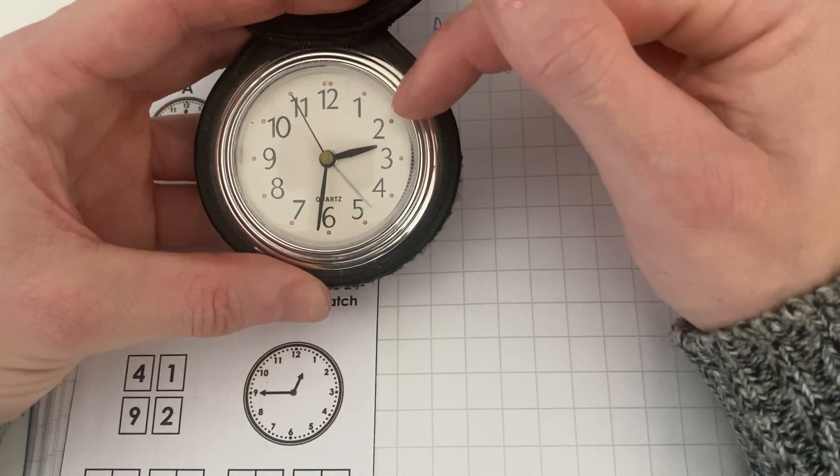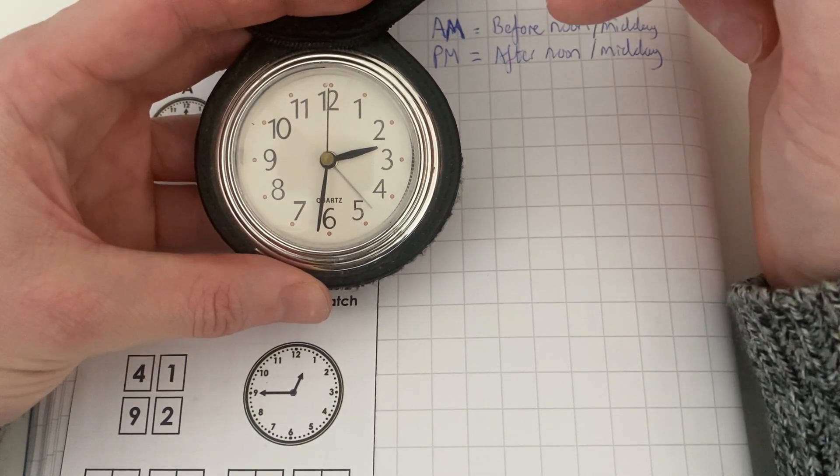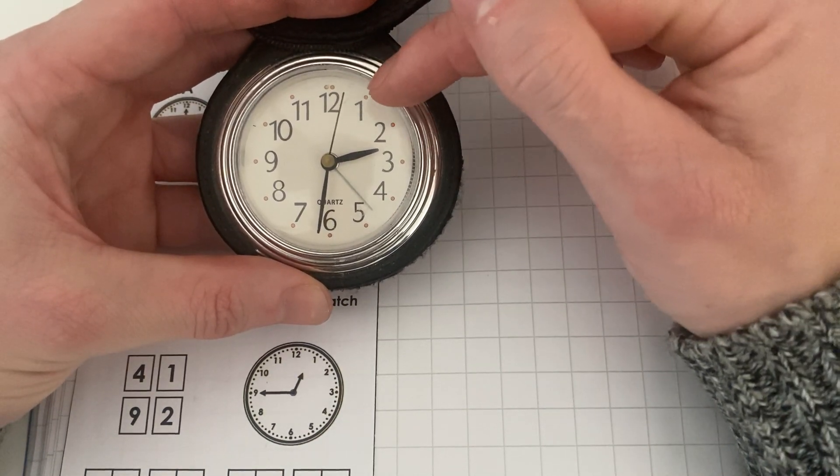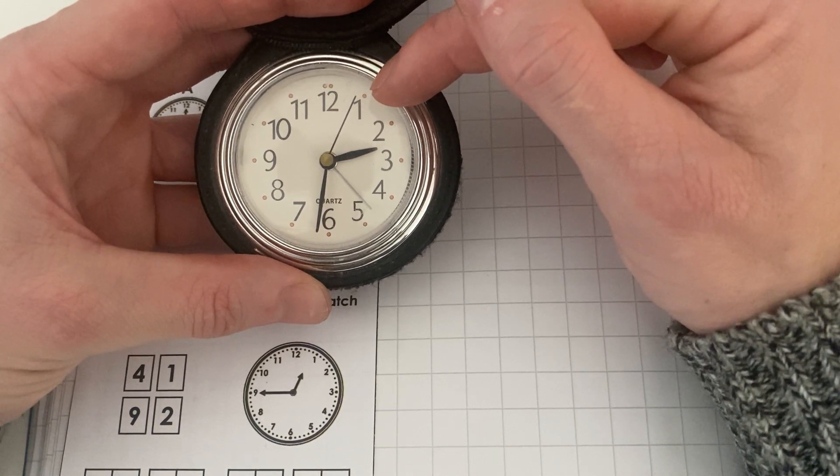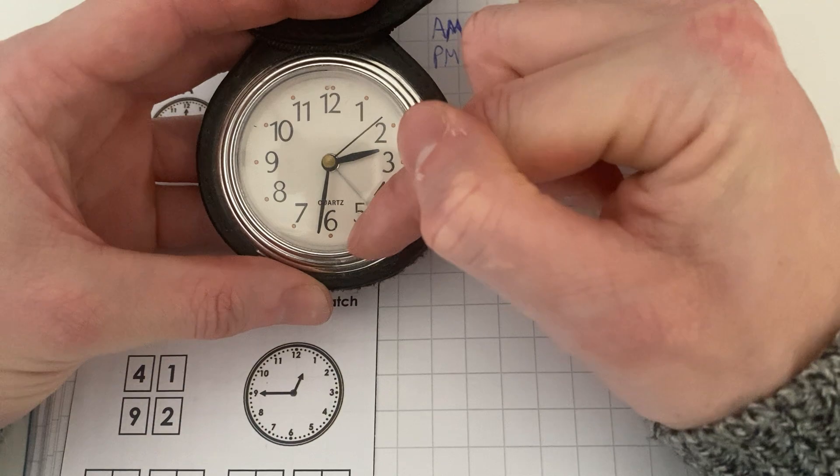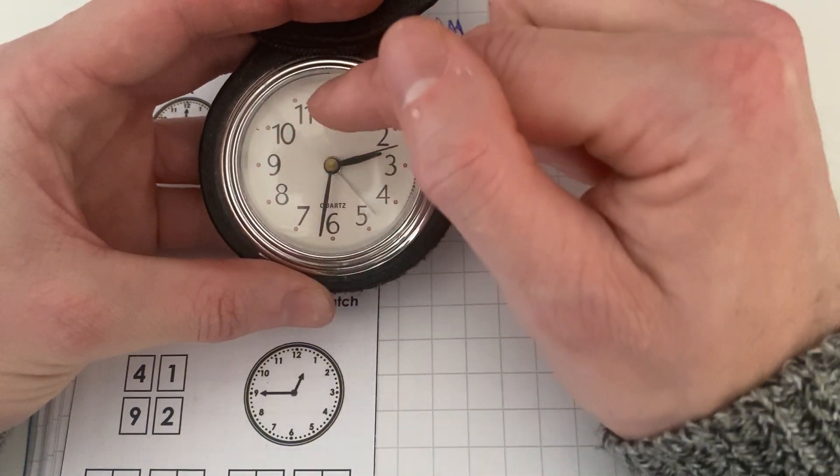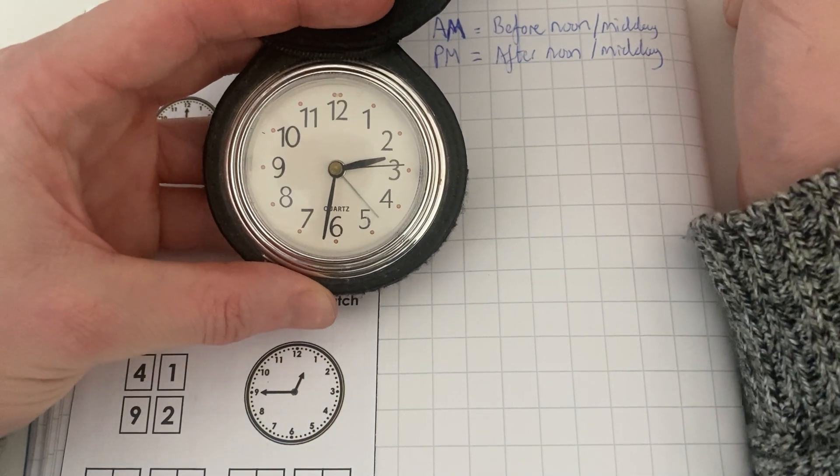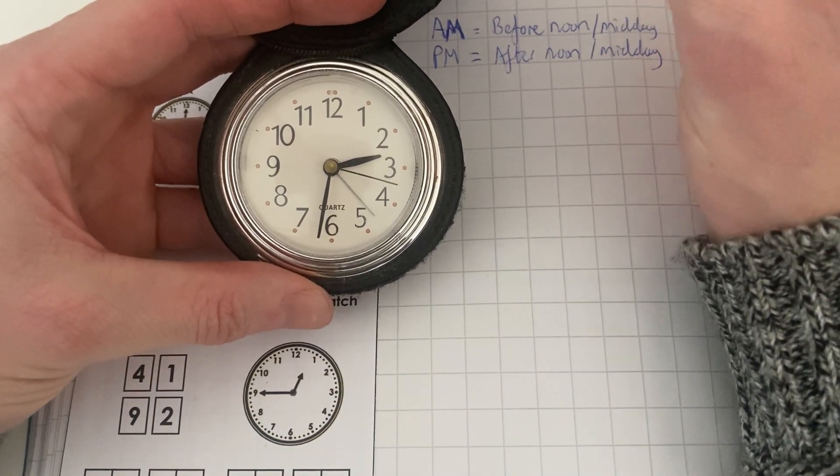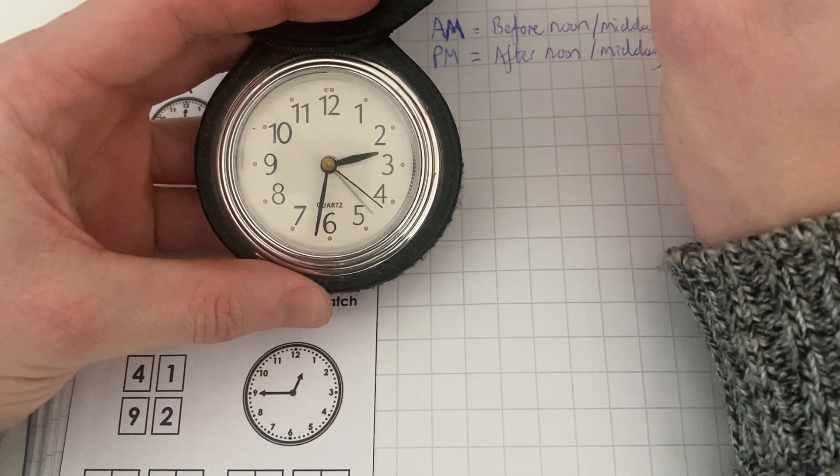And as you can see, we've got these orange dots and these are our intervals because in every hour there is 60 minutes and each of these intervals are worth five minutes. So we've got 5, 10, 15, 20, 25, 30, 35, 40, 45, 50, 55, 60. So that will help us identify the time that is shown on the clock face.